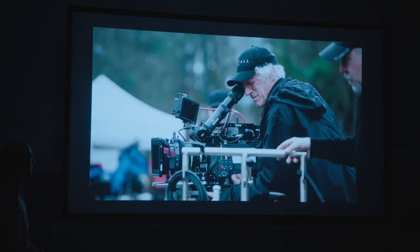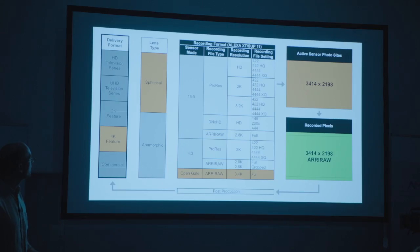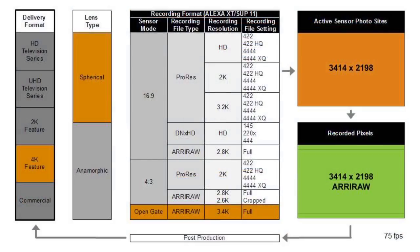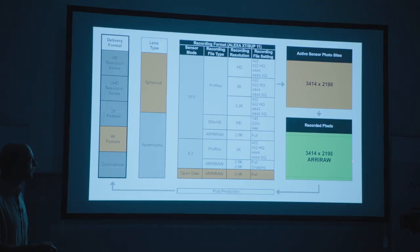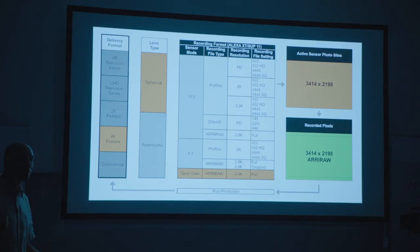The second approach I'm seeing now that we have Open Gate is people shooting Open Gate ARRI RAW 3.4K — the whole sensor — with every photosite going into the ARRI RAW file. You can see a 16x9 frame within it and also have space for VFX markers on the top and bottom. This is also used for spherical lenses shooting 2.4:1 CinemaScope without anamorphics. When upressing to 4K, it's slightly better to go from 3.4K to 4K than from 2.8K to 4K.